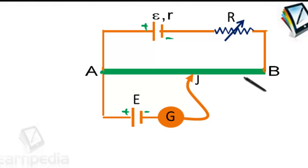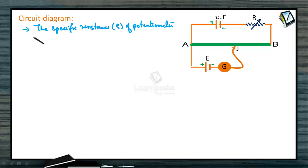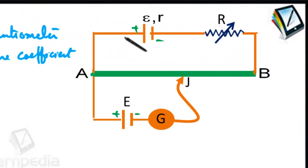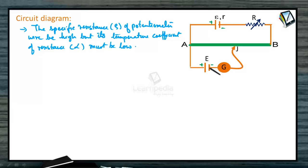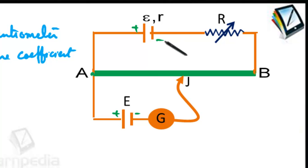The specific resistance rho of the potentiometer wire must be high, but its temperature coefficient of resistance alpha must be low. The positive terminals or high potential terminals are joined together, and the known battery EMF must be greater than the unknown potential difference — that is, small e must be greater than capital E. If capital E is larger, the known battery must be replaced with one of greater potential.